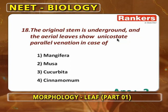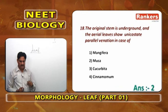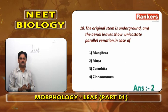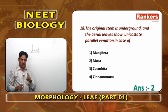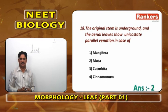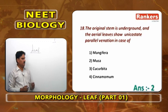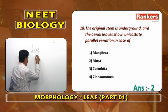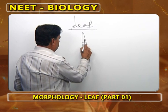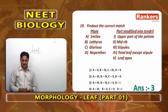The plant whose original stem is underground and aerial leaves show unicostate parallel venation is Musa. Mangifera, Cucurbita, and Cinnamomum show reticulate venation. Only Musa shows parallel venation. In Musa, the actual stem is an underground rhizome; the aerial pseudostem is formed by the fusion of sheathing leaf bases. Unicostate parallel venation means one midrib with venation arranged parallel on either side.